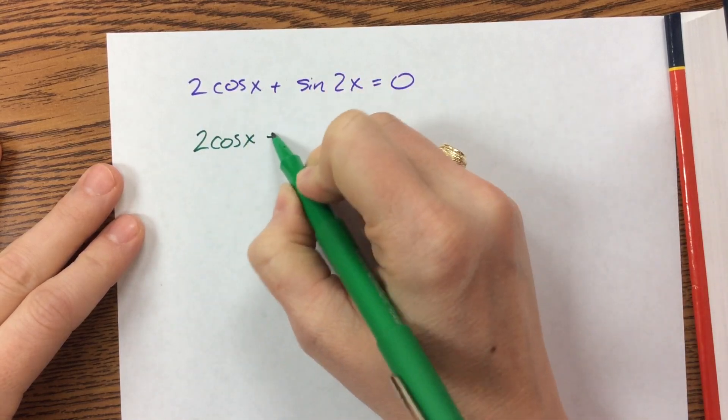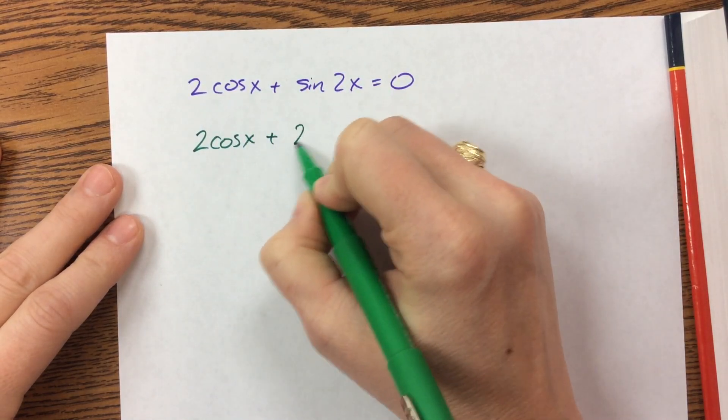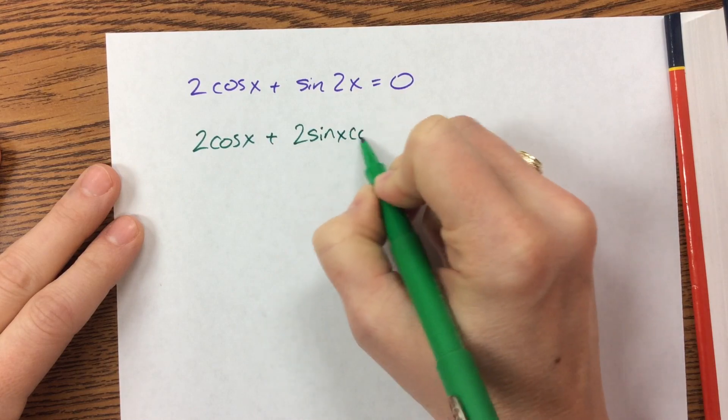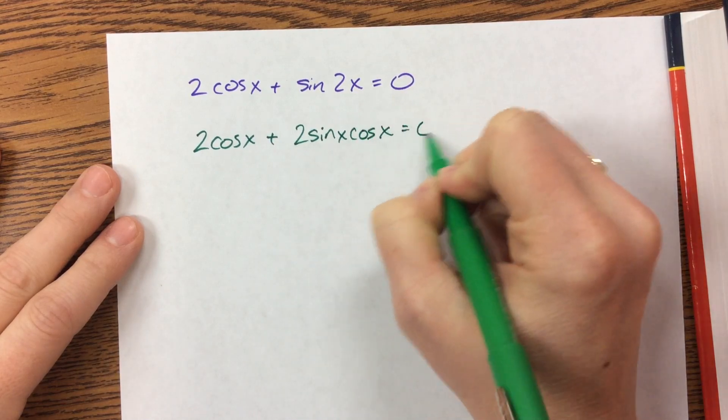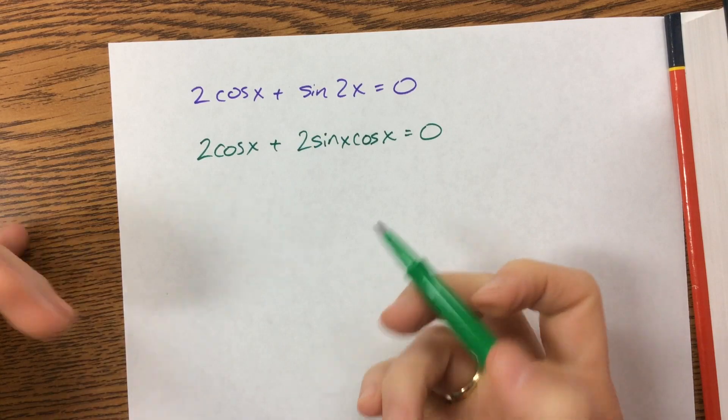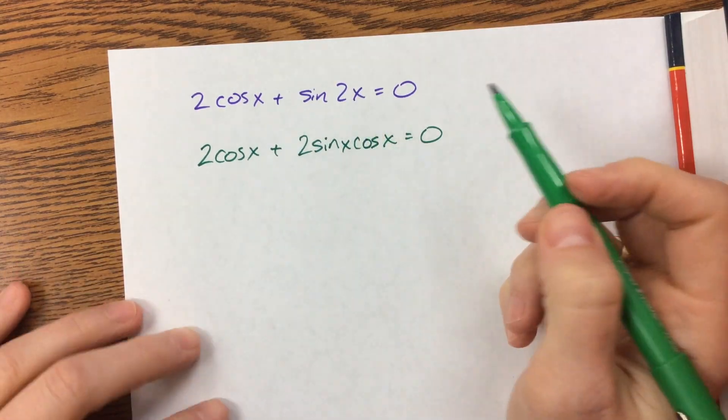I still have this right here. Sine of 2x is equal to 2 sine x cosine x. And that's really the trickiest part of that, is recognizing that that's a double angle identity.